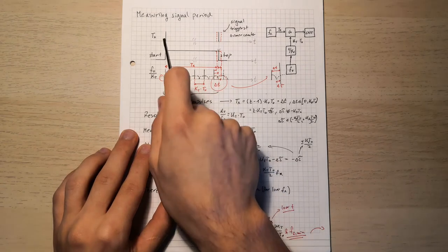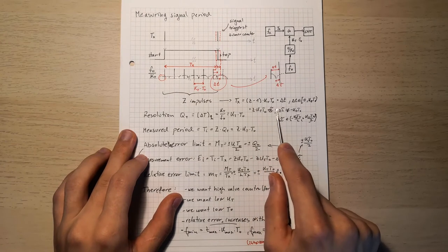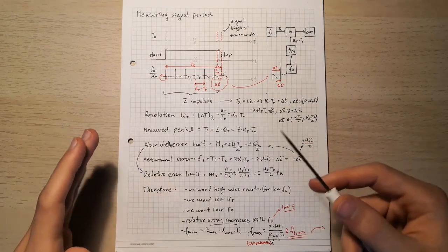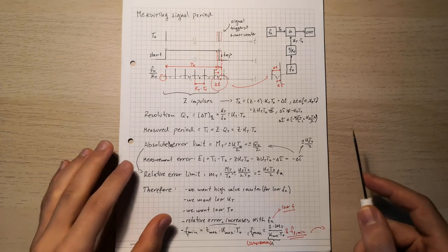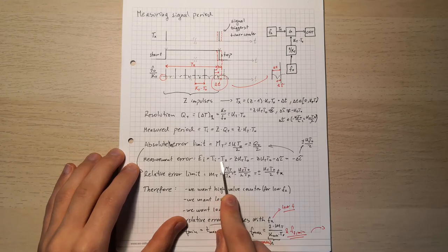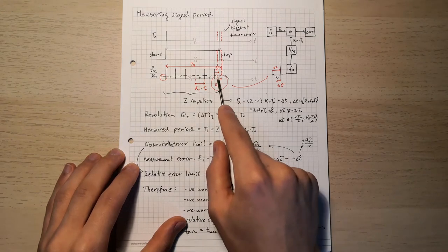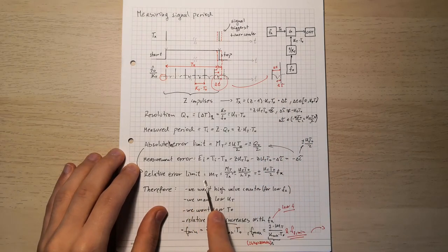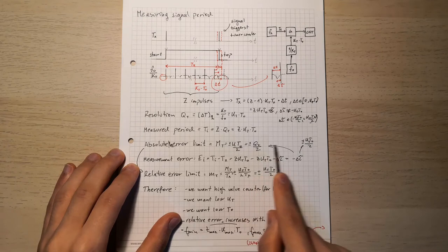With more pulses fitting into one period of our signal we get finer measurements. Because we always have this little delta tau, we're going to get errors. This is important for understanding the drawbacks and advantages of these methods, which is why I'll also talk about another method in the next video. To get the measurement error EI, we take our measured period TI and subtract the actual period TX, and our end result is minus delta tau.